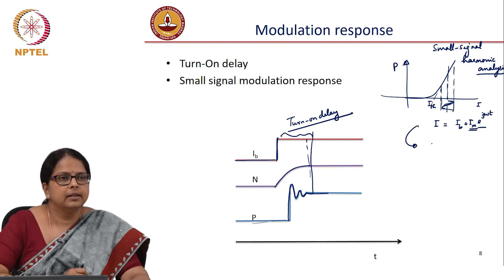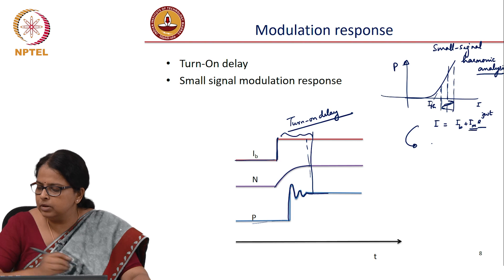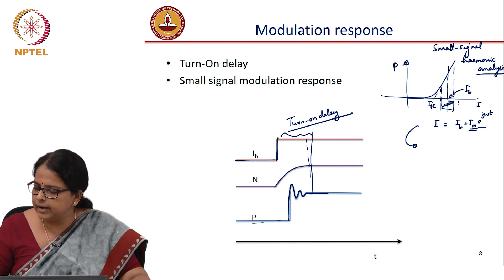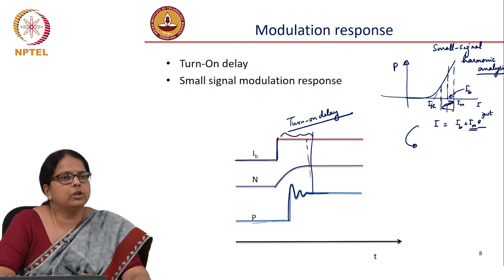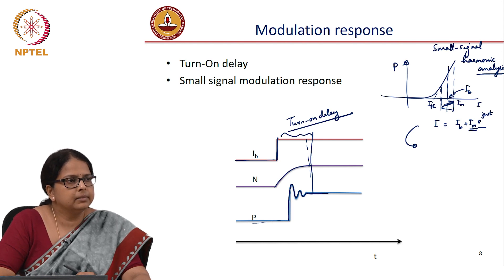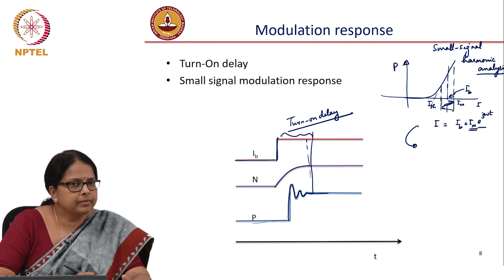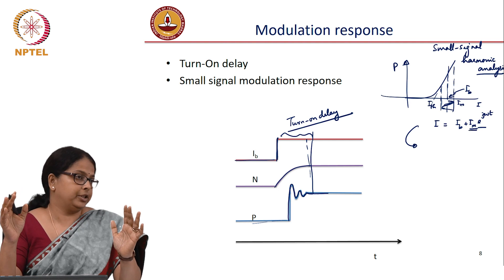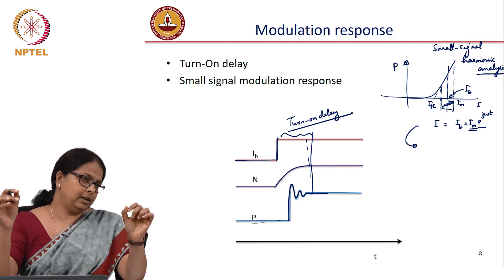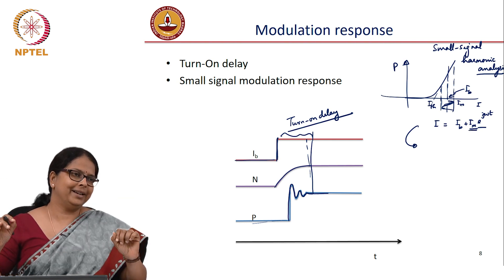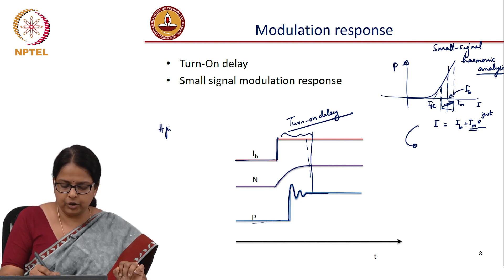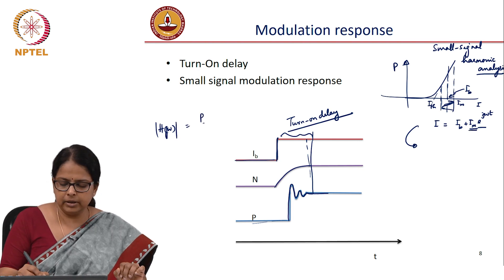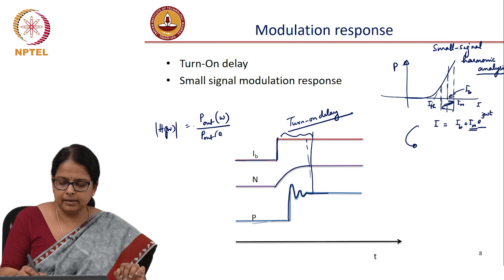Corresponding to this, around the bias IB, you are giving an IM which is e^(jωt). Your goal is to find the transfer function of the system. The transfer function is: output power in the presence of modulation divided by output power in the absence of modulation — that is, |H(jω)| = P_out with modulation divided by P_out at ω=0.